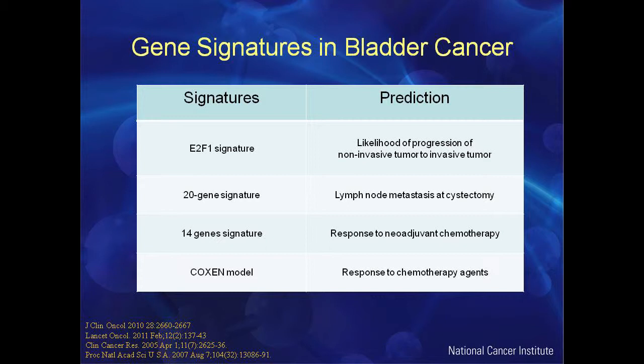A selective list of gene signatures published in bladder cancer includes: a signature to predict the likelihood of progression from non-invasive to invasive tumor; a signature that can predict likelihood of lymph node metastases at the time of cystectomy; and another that can predict response to neoadjuvant chemotherapy. A Coxon model is also being developed combining cell line data on response to a chemotherapeutic agent with tumor gene expression data to generate a response score. All of these are being investigated for clinical use.